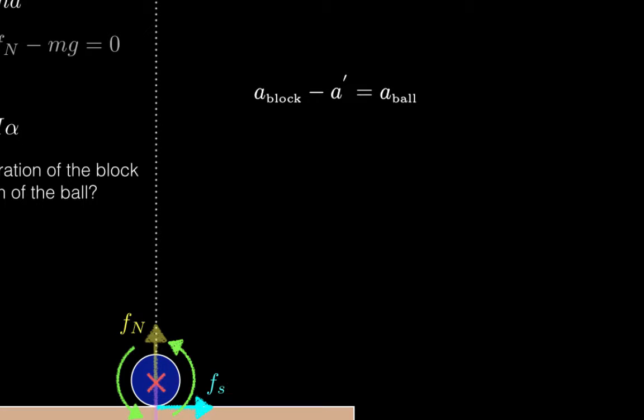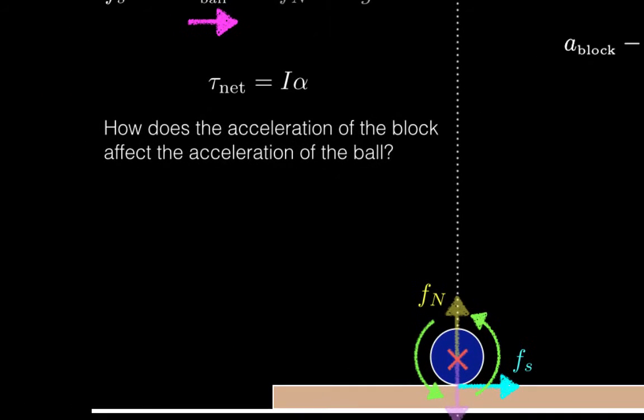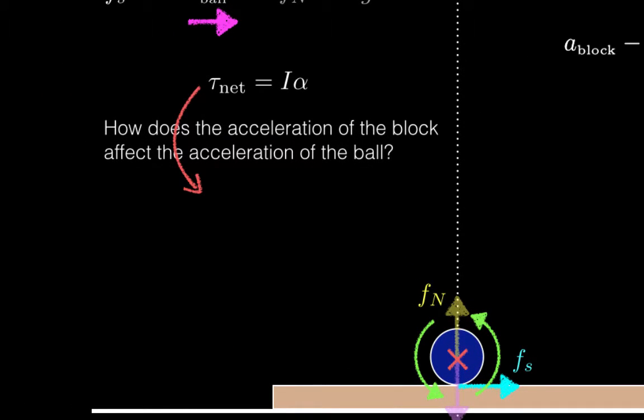I want a relationship between the acceleration of the block and the acceleration of the ball, so I'll need to eliminate A prime. Going back to torque net equals I alpha, replace torque net with RFs. Then replace I with the rotational inertia of a solid sphere, 2 fifths MR squared, and replace alpha by using the rolling condition. Alpha is A prime over R because the ball rolls over the board.